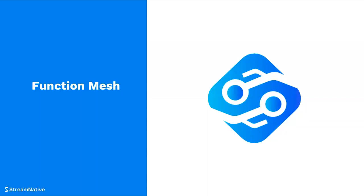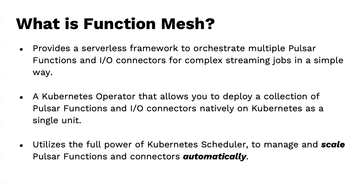When you start having lots of functions — building data processing pipelines like an ETL pipeline — you need to stitch them together. Function Mesh is an open-source Kubernetes operator that deploys many individual Pulsar functions as a whole application unit. You define your application as a mesh of functions, specifying input and output topics. You can spin them down or up dynamically, and it utilizes the Kubernetes scheduler under the covers to add scalability.